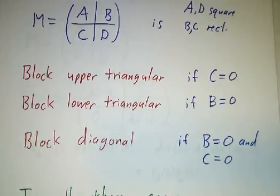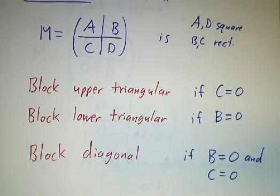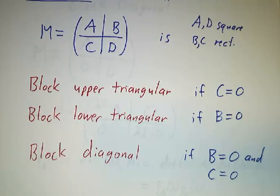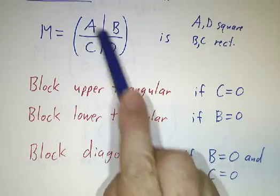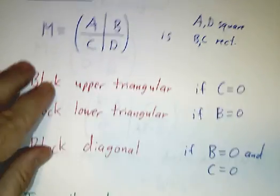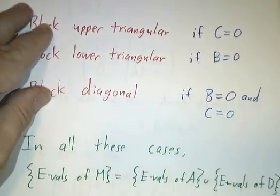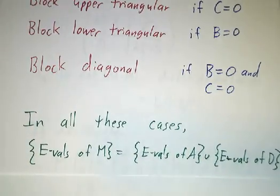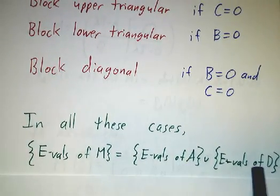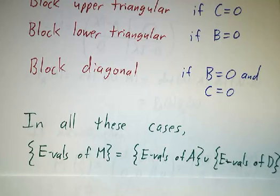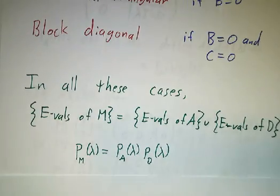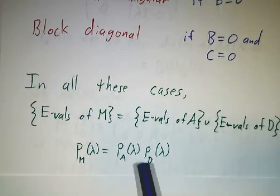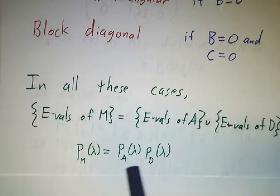What's so great about all of these cases is that the problem of finding eigenvalues of this big matrix reduces to studying the matrix A and the matrix D. In all of the cases, the eigenvalues of the big matrix are just the eigenvalues of A together with the eigenvalues of D. That's a lot simpler — small matrices are easier to handle than big matrices. And the characteristic polynomial of the big matrix is the product of the characteristic polynomials of A and D.